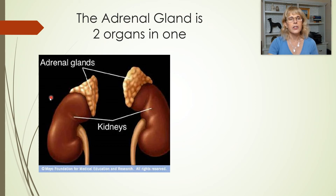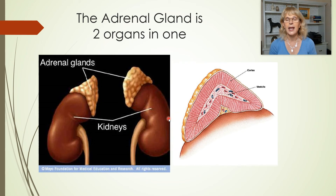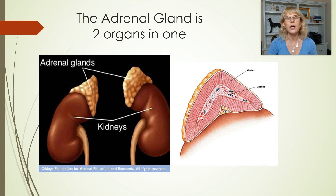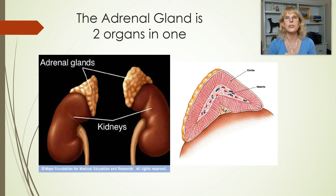The adrenal glands sit on the kidneys like little hats. If you cut one open, you can see the outer region — the adrenal cortex, made of glandular epithelium — and the central region called the adrenal medulla. Cortisol, a steroid hormone of chronic stress, comes from the adrenal cortex. Adrenaline, which is a hydrophilic hormone from the adrenal medulla, is also known as epinephrine.